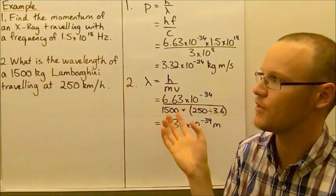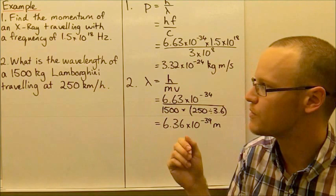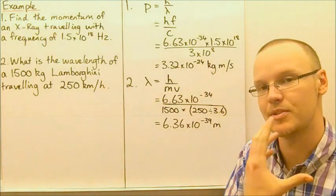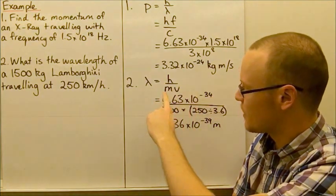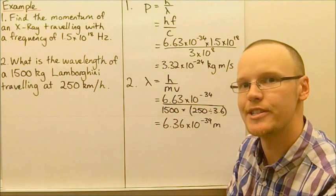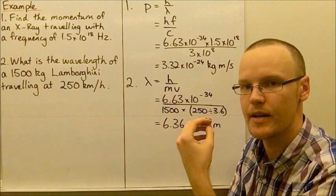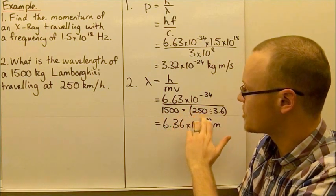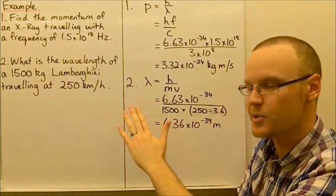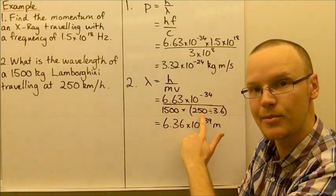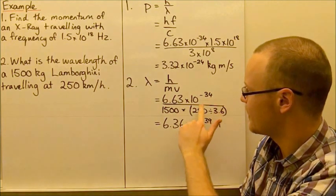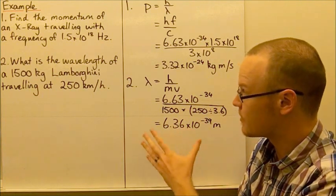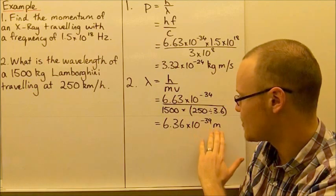Looking at question two, what is the wavelength of a 1,500 kilogram Lamborghini traveling at 250 kilometers an hour? We can use the de Broglie formula to work out the matter waves, the de Broglie wavelength here. Substituting in Planck's constant, we're using SI units for mass and velocity. The velocity isn't in meters per second, so to convert 250 kilometers per hour to meters per second, we divide by 3.6. Plugging all that in, we see that the wavelength of our Lamborghini is 6.36×10⁻³⁹ meters.